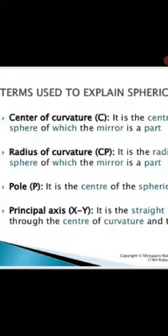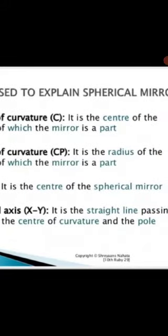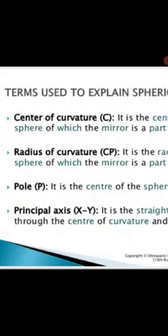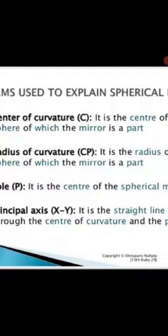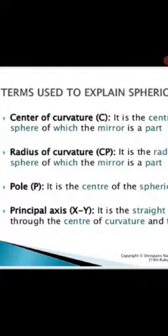That you know already, M M dash that only I represented in our class. Radius of curvature: it is the CP, it is the radius of the sphere of which the mirror is a part. So radius of curvature needs a circle. From the center of curvature we have to make a circle and then only we can say that this is the center.